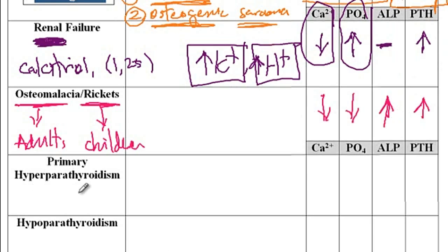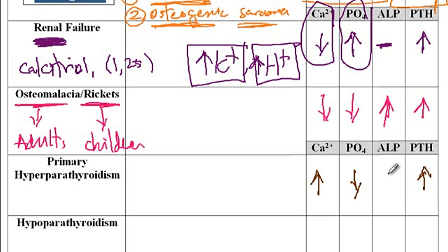The next condition is primary hyperparathyroidism, where there is an elevated level of parathyroid hormone, resulting in more calcium and less phosphate in the serum. Since parathyroid hormone activates vitamin D and acts on osteoblasts to regulate RANK-L secretion, the level of osteoblast activity is elevated, so there would be elevated alkaline phosphatase. Overall, despite increased vitamin D absorption, parathyroid hormone causes more bone resorption than bone formation, despite the elevated ALP.